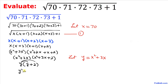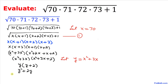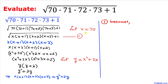Distributing y times (y+2) gives us y²+2y. So the inside of our radical from expression 1 becomes y²+2y+1.